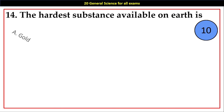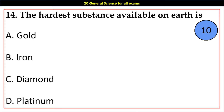Question number 14. The hardest substance available on earth is: Options A. Gold, B. Iron, C. Diamond, D. Platinum. Answer: C. Diamond.